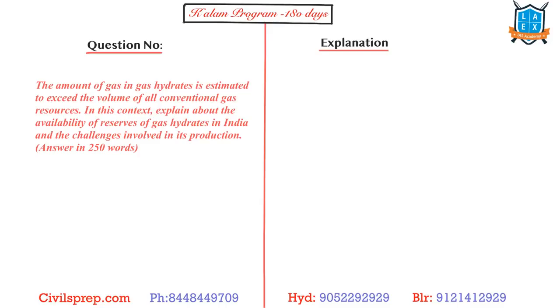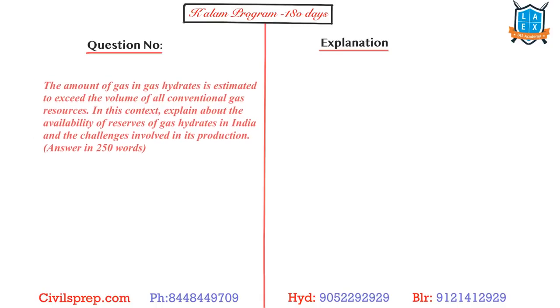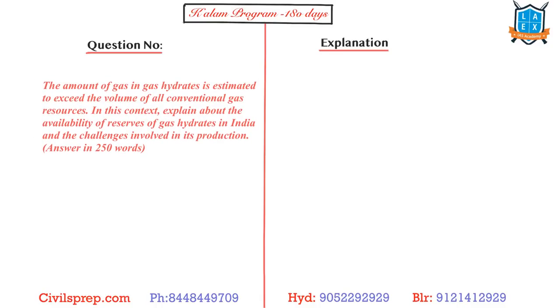But it is believed that especially near the KG Basin you have good amount of gas hydrates present. And these gas hydrates are present in different parts of the world but there is no technology to extract it. In India these gas hydrates are associated with the coarse grains that are actually present near the KG Basin.